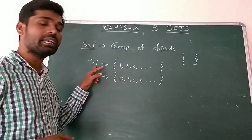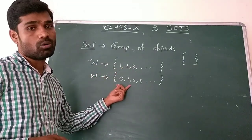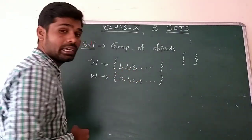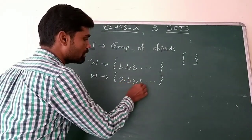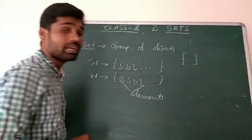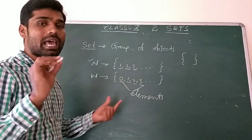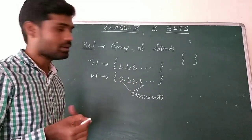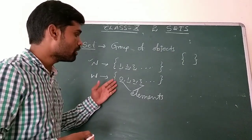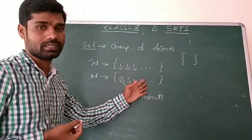N is a set of natural numbers and W is a set of whole numbers. The things which are in a set are called elements. For example, in the set of whole numbers, we have 0, 1, 2, 3 — we cannot count all of them, so there are many elements.